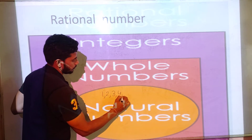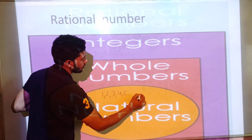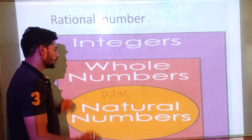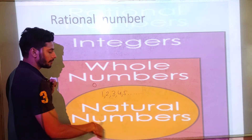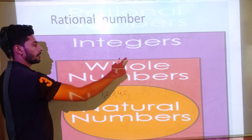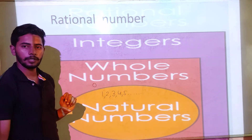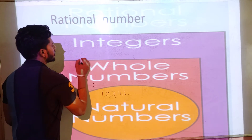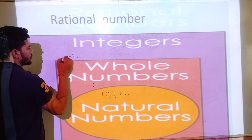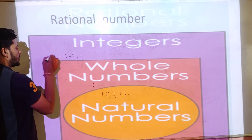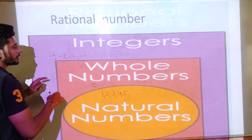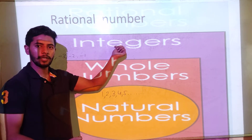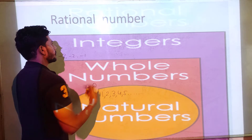Natural numbers are 1, 2, 3, 4, 5 and they go on forever. If we add 0 to the set of natural numbers, it becomes the set of whole numbers. If we also add negative numbers like minus 1, minus 2, minus 3, minus 4 and so on, the whole set is called integers.